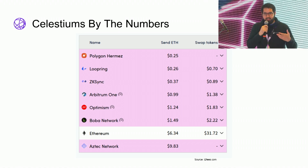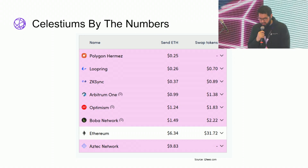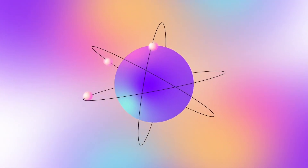Celestia, through Celestium and the Quantum Gravity Bridge, offers something that's essentially as secure as Ethereum, but provides the low cost of a data availability committee.